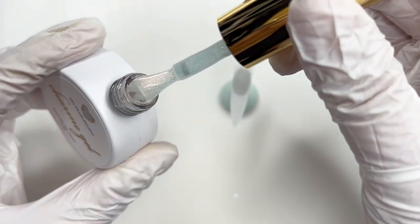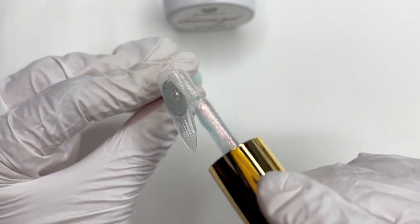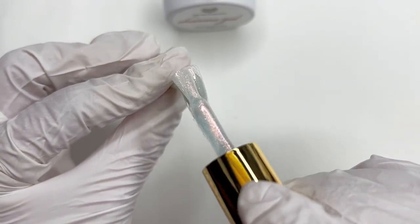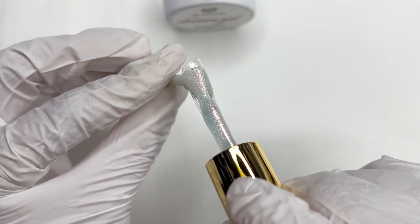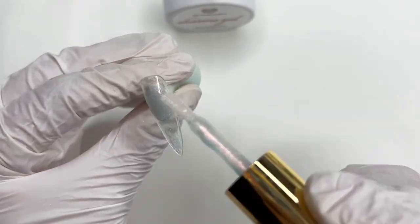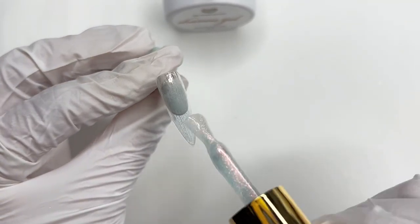I'm using S82. It is kind of like a sheer, milky, iridescent glitter. I'm only going to do one layer for this one because I'm going to cover most of this nail with more glitter.